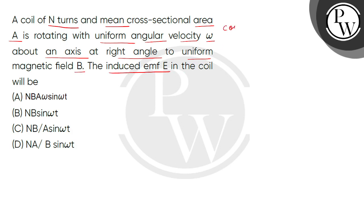Given in our question: a coil in which the number of turns is N, its mean cross-sectional area is A, and its rotational angular velocity is omega. It will rotate in a uniform magnetic field at right angle.